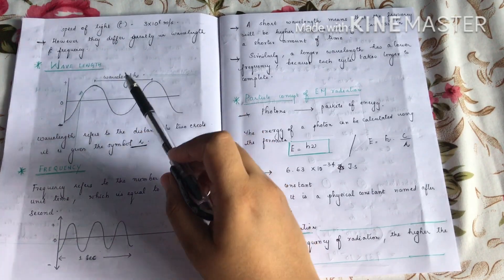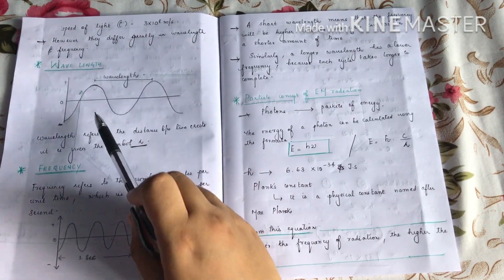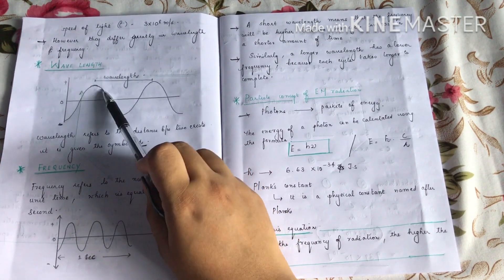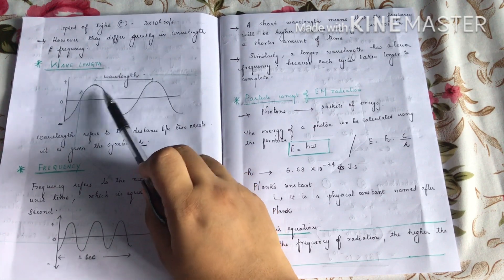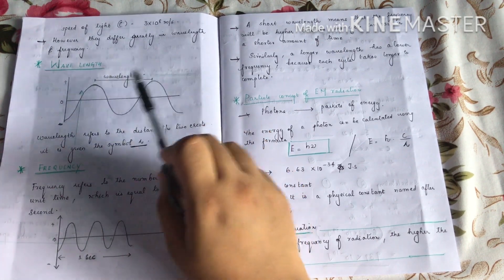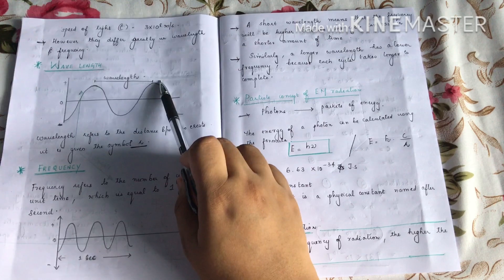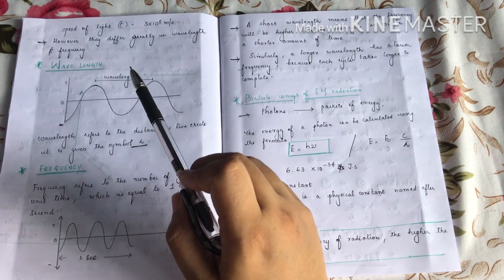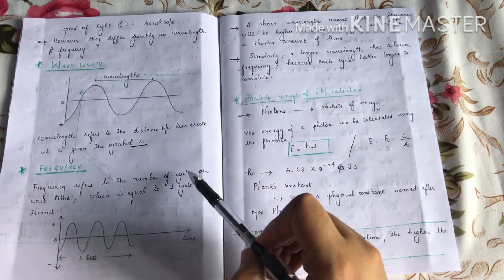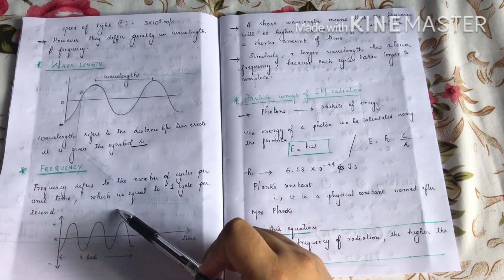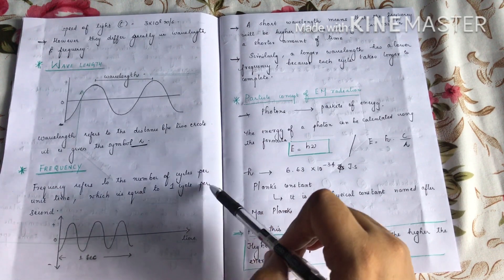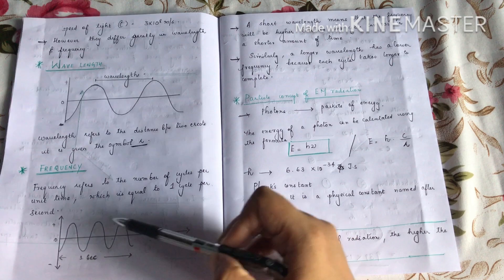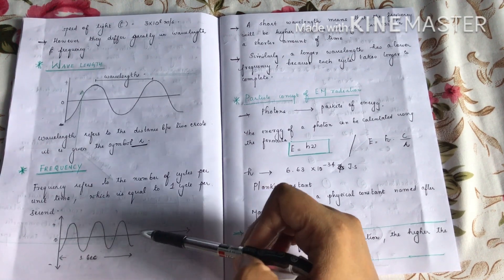What is wavelength? Wavelength refers to the distance between two crests, that is the distance between consecutive waves. The symbol we are using is lambda. What is frequency? It refers to the number of cycles per unit time, which is equal to one cycle per second. That is, in one second, how many waves are formed. That is the frequency.